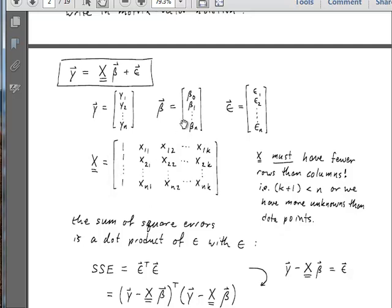So every one of these, when you multiply x by the vector beta, will give you a beta 0 term that does not depend, that is not multiplied by any of these x variables. So this is just a way of writing this equation as a single compact matrix equation.